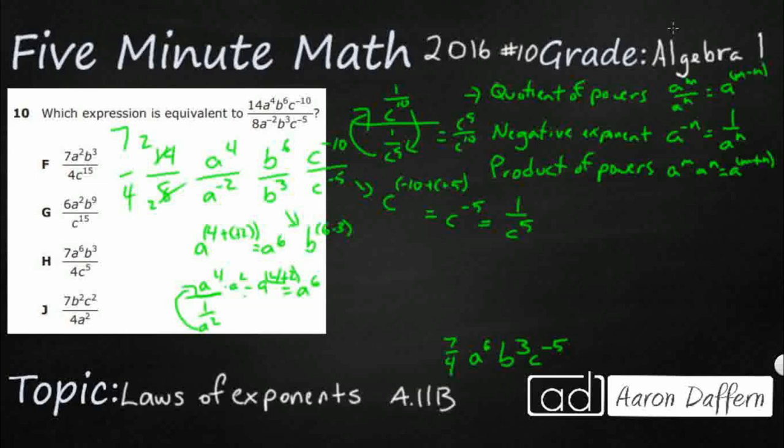So, how do we turn this into an expression? Well, let's write it 7 fourths. A to the sixth is going to end up on top. B to the third is going to end up on top. C to the negative fifth means it's going to end up on the bottom, since we need the reciprocal.